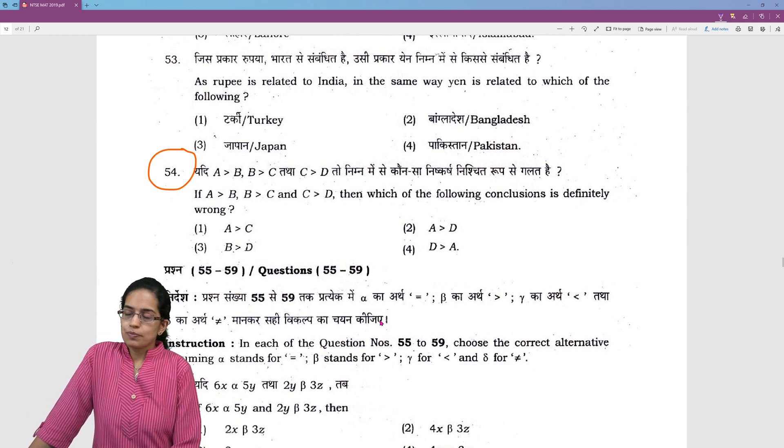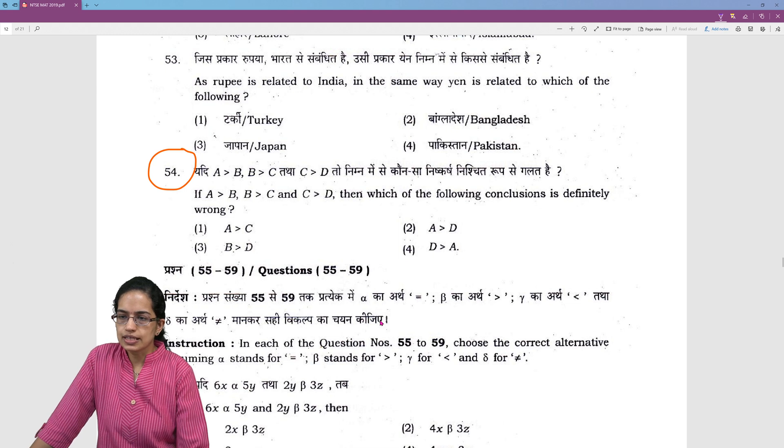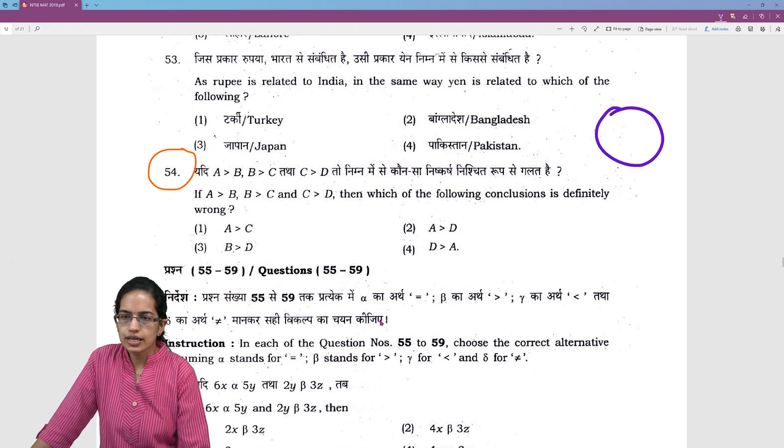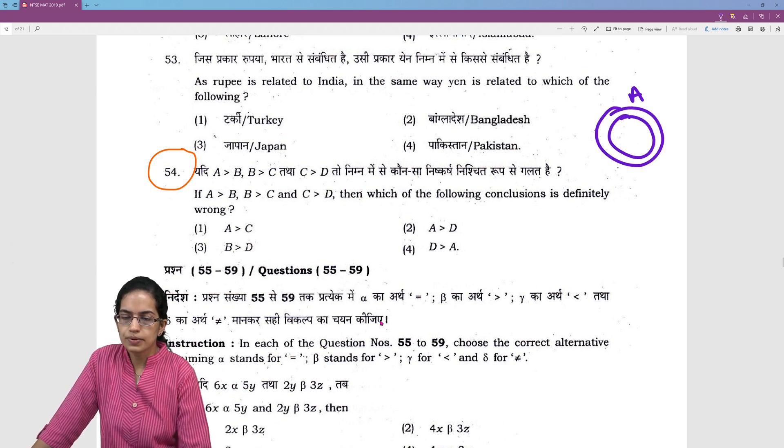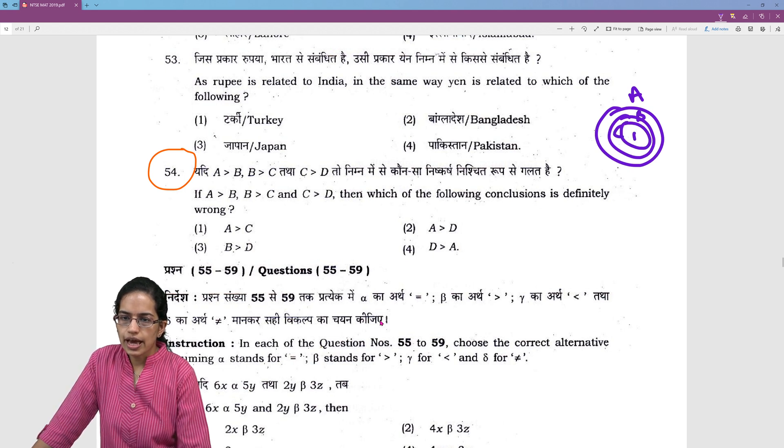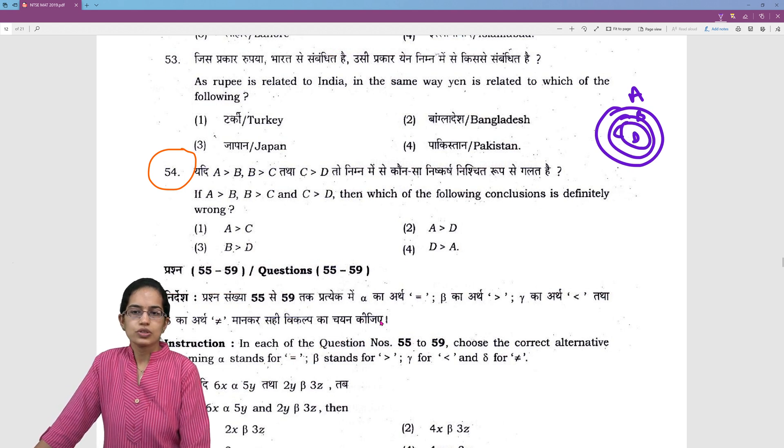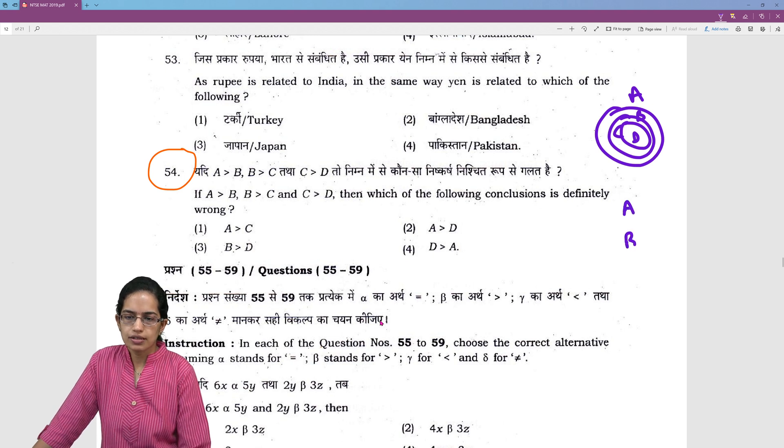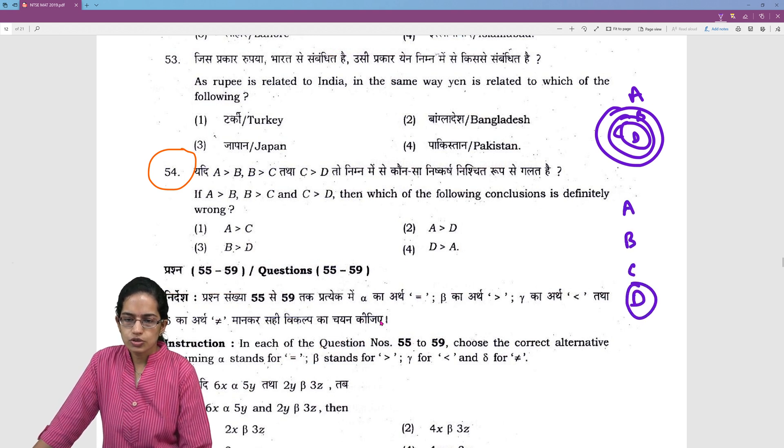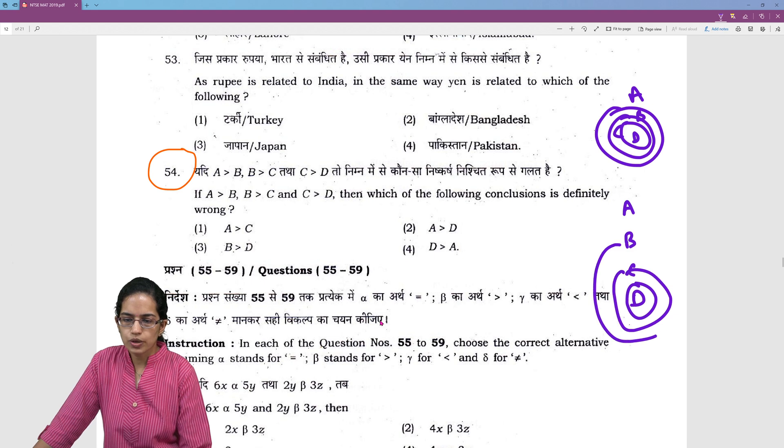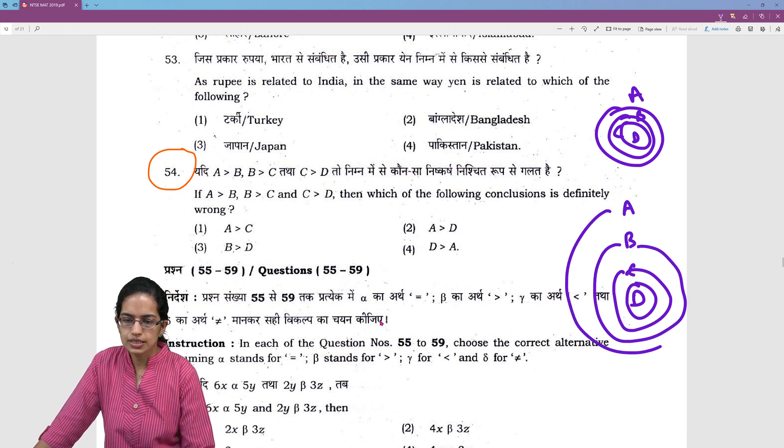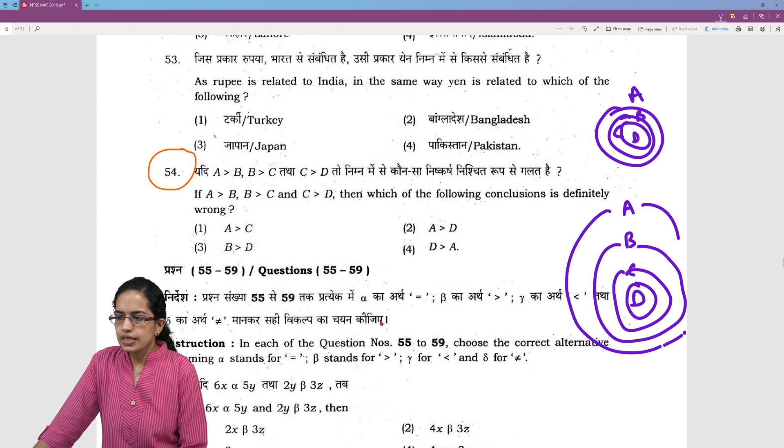Again, an analytical problem. If A is bigger than B, I can draw it. A is bigger than B. B is bigger than C and C is bigger than D. So, that's the dimension. A bigger B than C and then D. So, this is the smallest square, bigger circle and bigger circle.